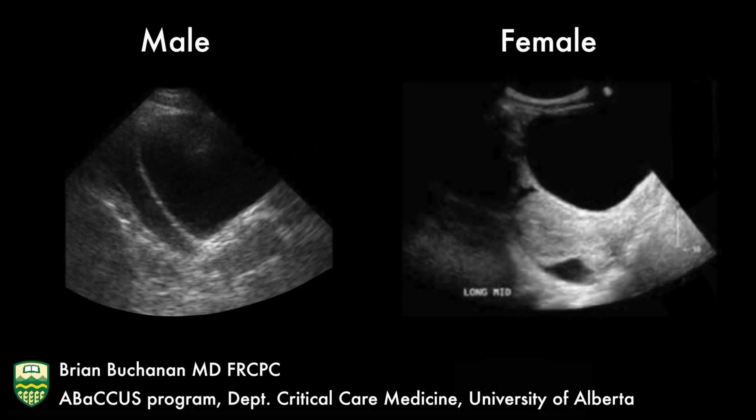In these two still ultrasound images, free fluid is seen collecting above the bladder in the male, and above and behind the uterus in the female.